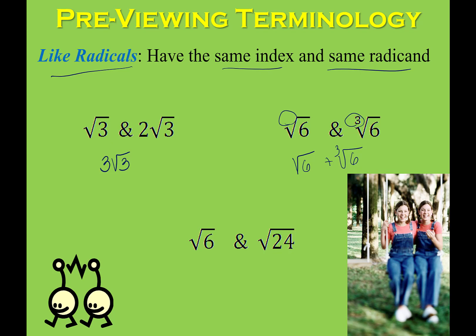Now the third example: some students might say the radicands don't match, so I can't do anything. But that's not the whole story. Sometimes you have to simplify the radicals first to see whether they are like radicals. If I look at 24, that can be broken into 6 times 4, and I can take the square root of 4. So I get the square root of 6 for the first one, and 2 square roots of 6 for the second one — and these can be added or subtracted because they are like radicals.